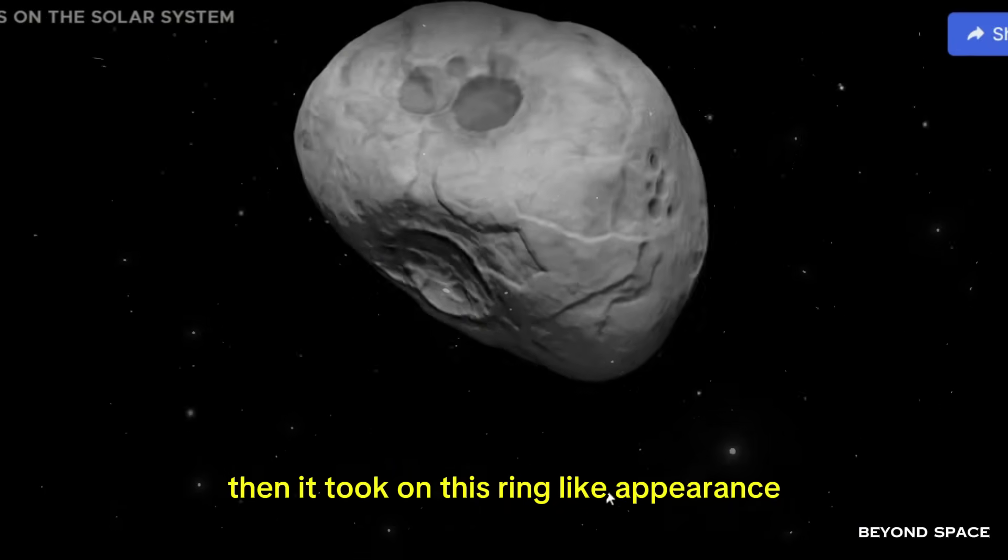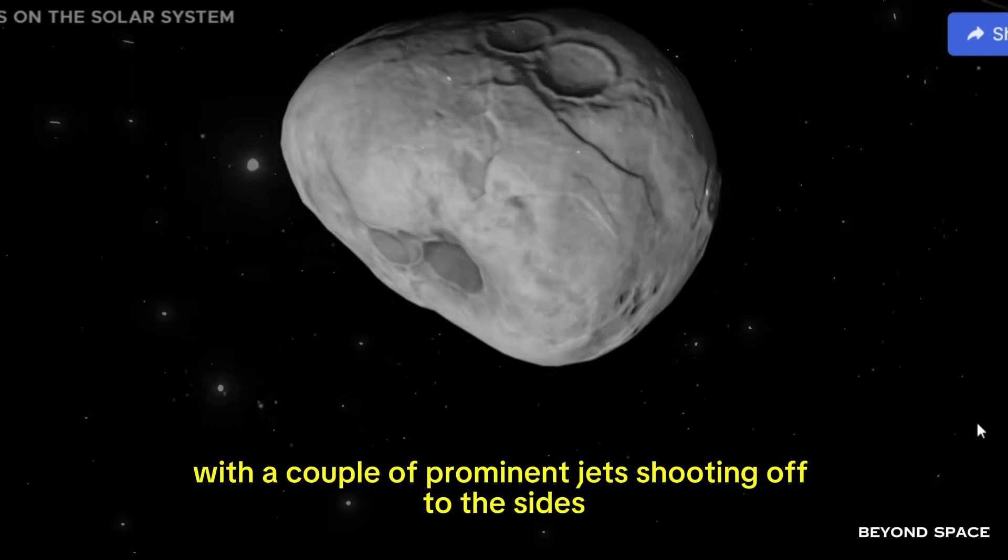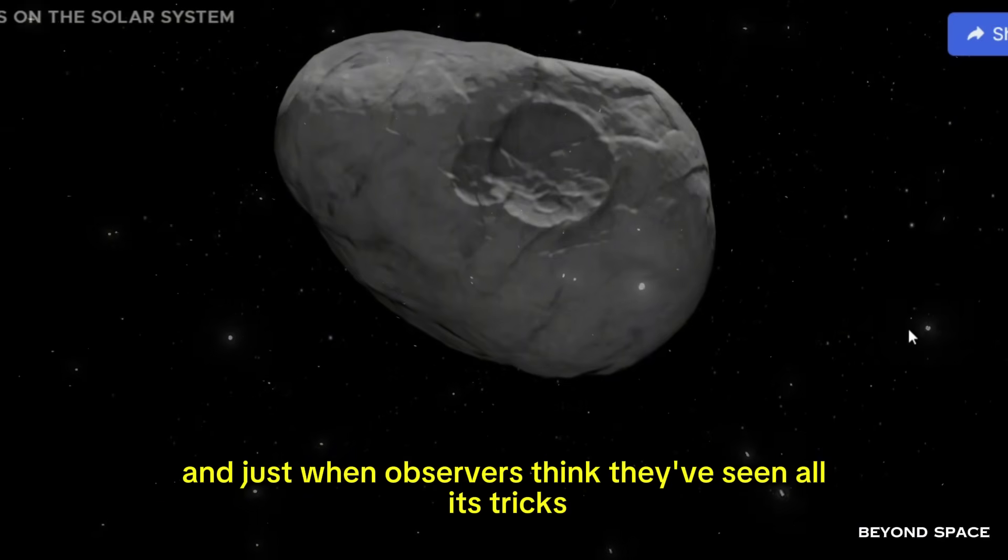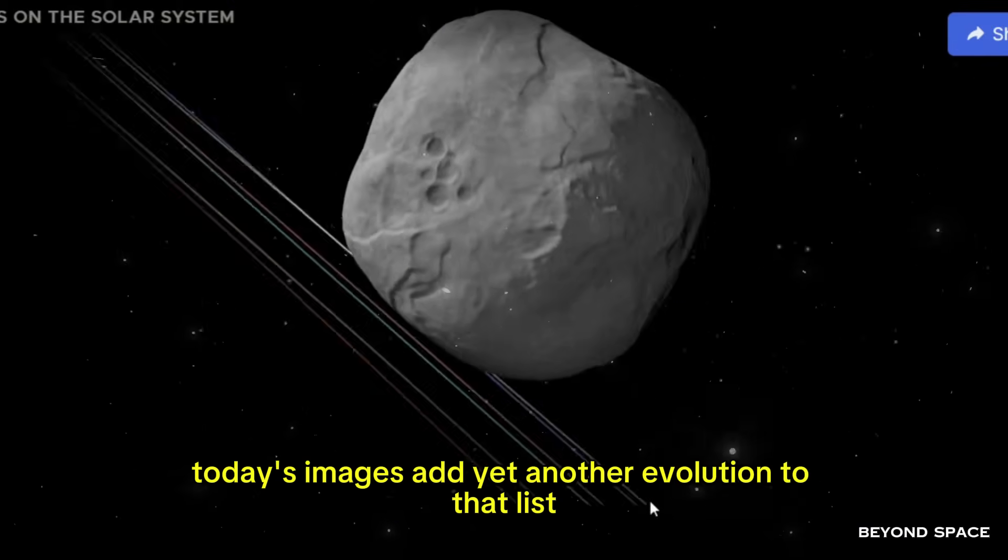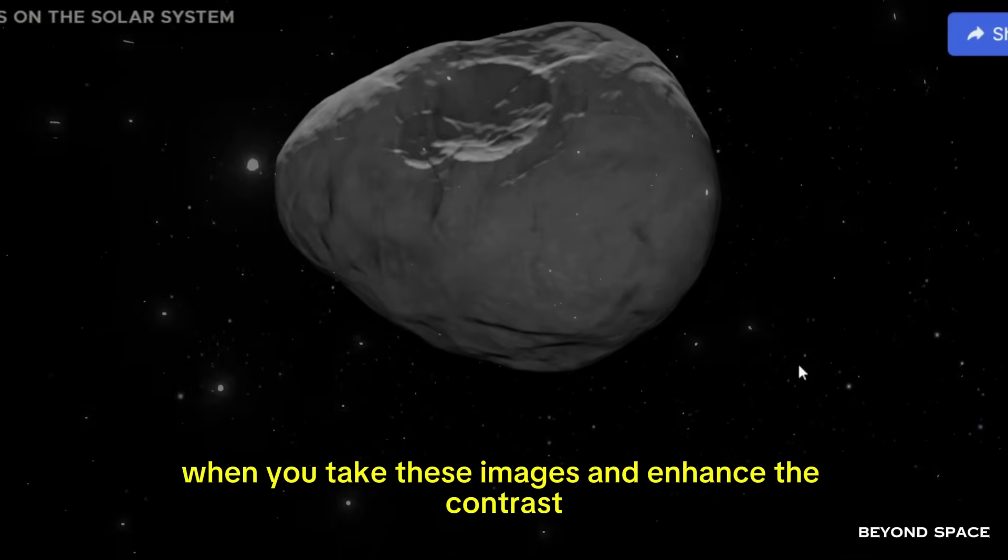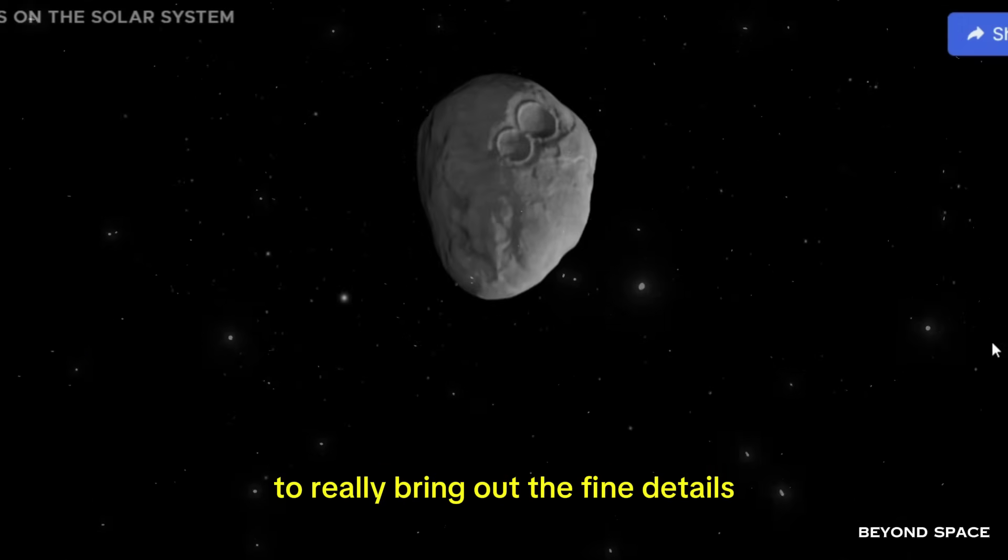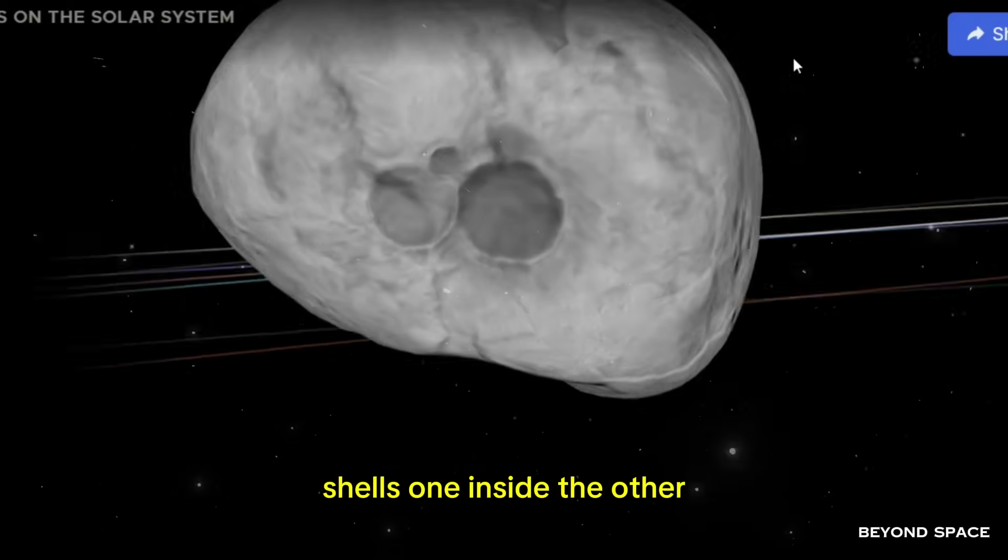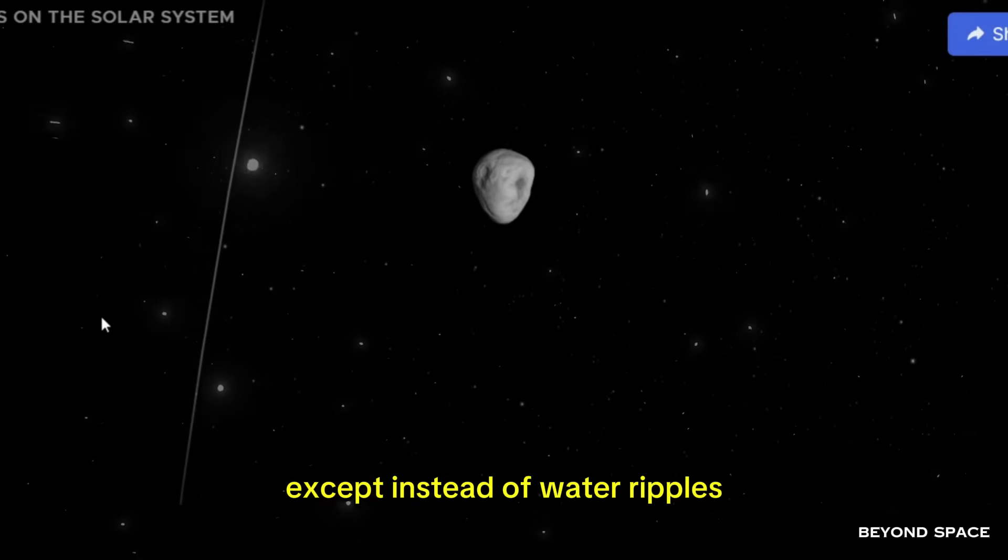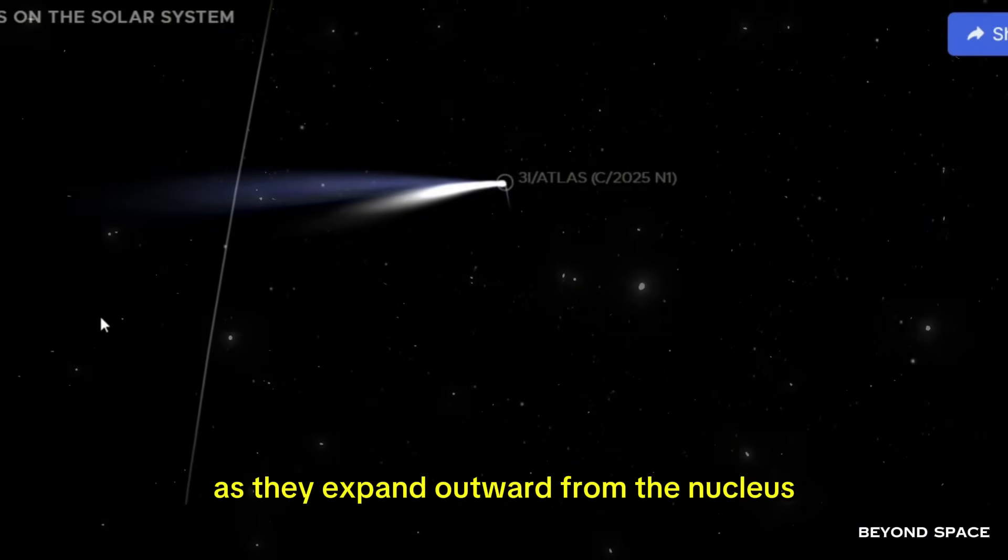There were periods where it looked almost hollow in the center. Then it took on this ring-like appearance, and then it went back to having a bright central core with a couple of prominent jets shooting off to the sides. It's been this constantly evolving, shape-shifting thing. And just when observers think they've seen all its tricks, it does something new. Today's images add yet another evolution to that list, and this one is particularly striking. When you take these images and enhance the contrast, when you subtract out the average background brightness to really bring out the fine details, you start to see these layers. Concentric shells, one inside the other, like the rings you see when you drop a stone into a still pond.